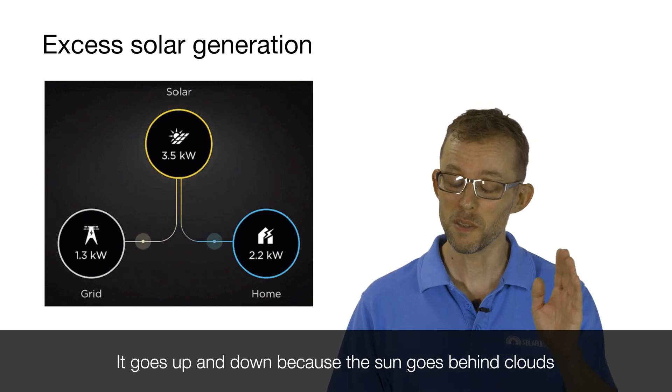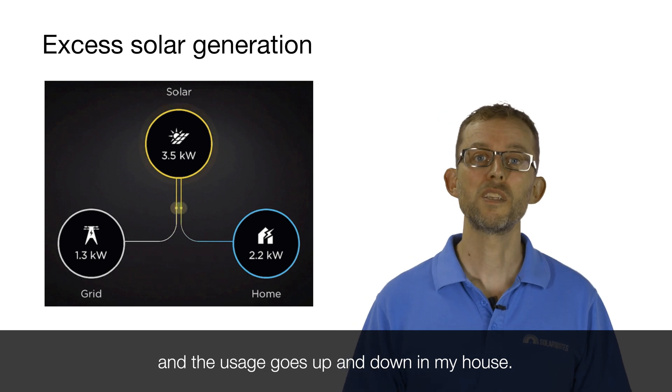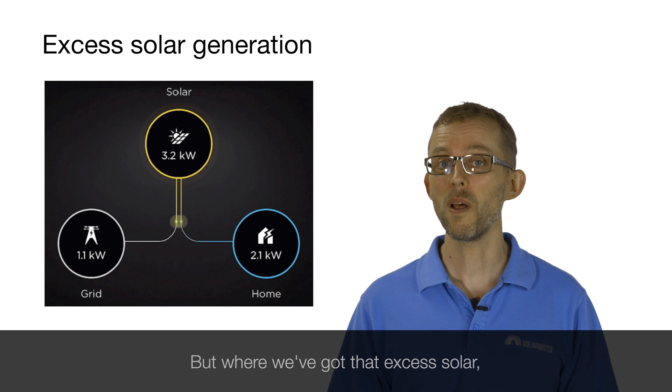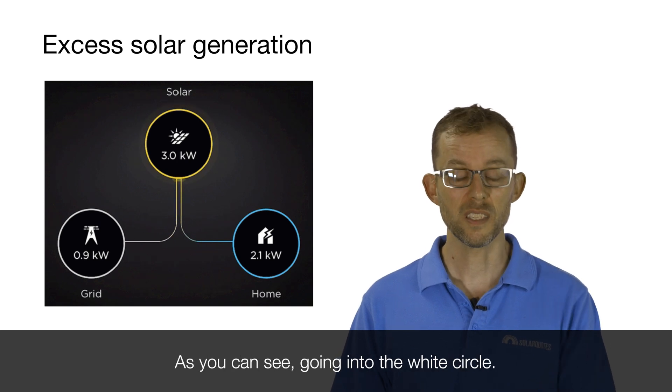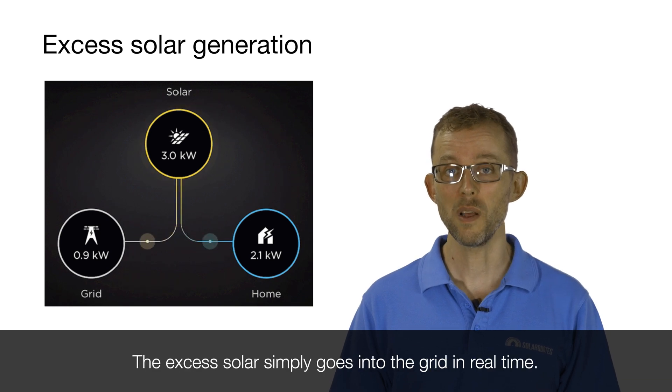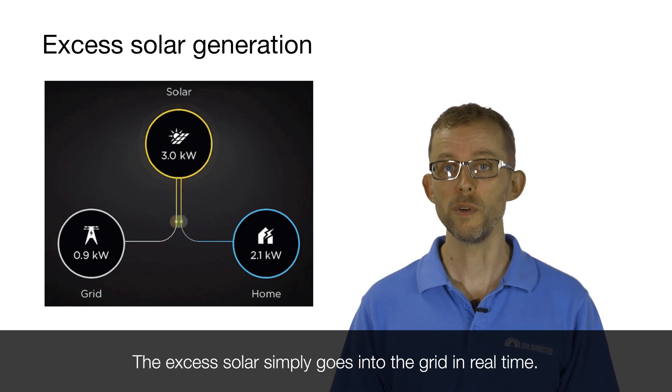So we've got about three kilowatts of excess solar power being generated. It goes up and down because the sun goes behind clouds and the usage fluctuates in my house. But where we've got that excess solar, it just goes straight into the grid, as you can see going into the white circle. The excess solar simply goes into the grid in real time.